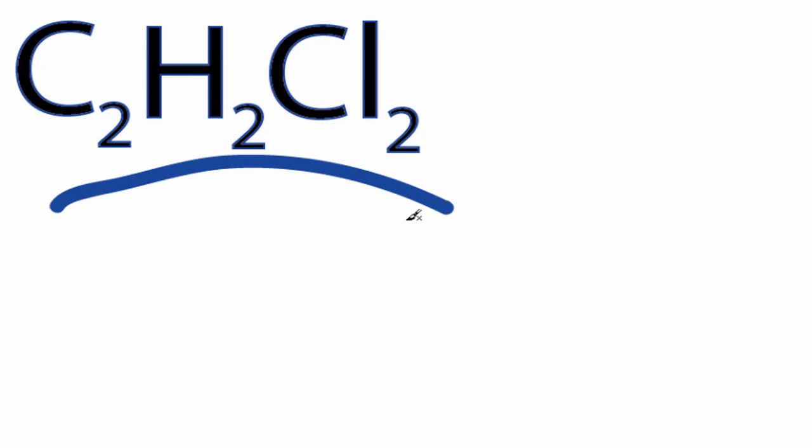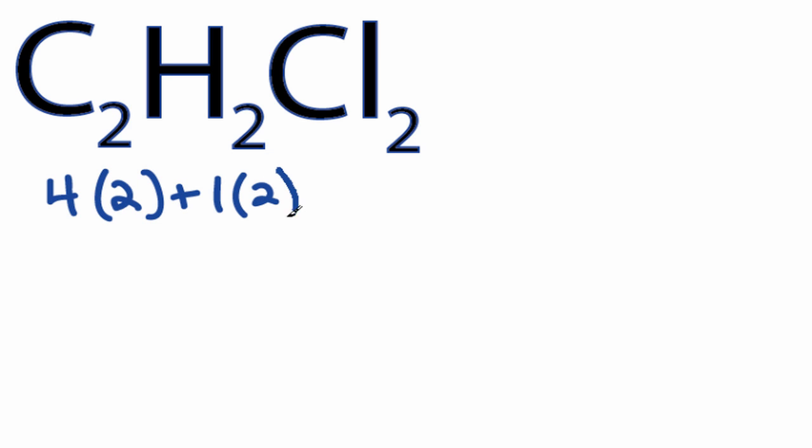This is the C2H2Cl2 Lewis structure. Carbon has 4 valence electrons, 2 carbons. Hydrogen has 1, but we have 2 hydrogens, plus chlorine which is 7. We have 2 chlorines, for a total of 24 valence electrons.